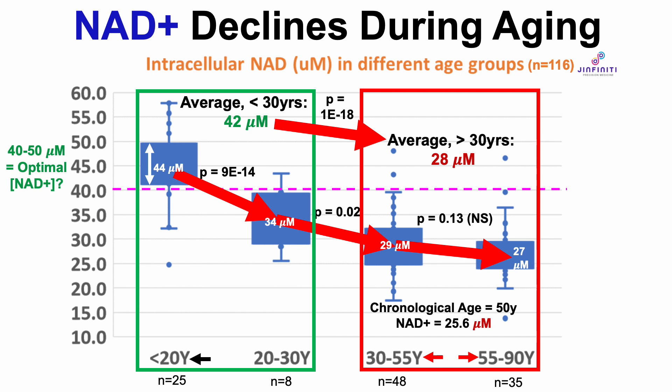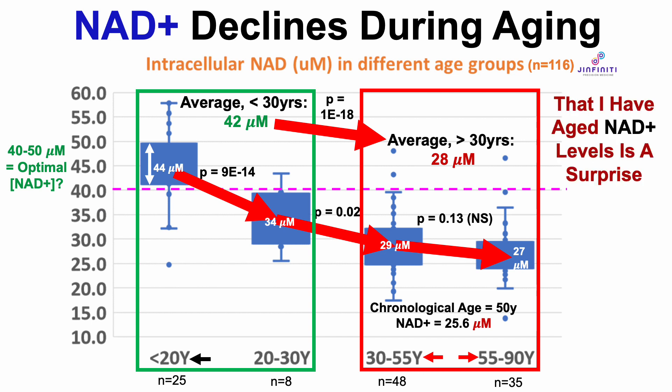What about the optimal range of 40 to 100 micromolar? If we look at GINFINITY's data for people younger than 20, the interquartile range — that blue box — would suggest that 40 to 50 micromolar may be optimal.